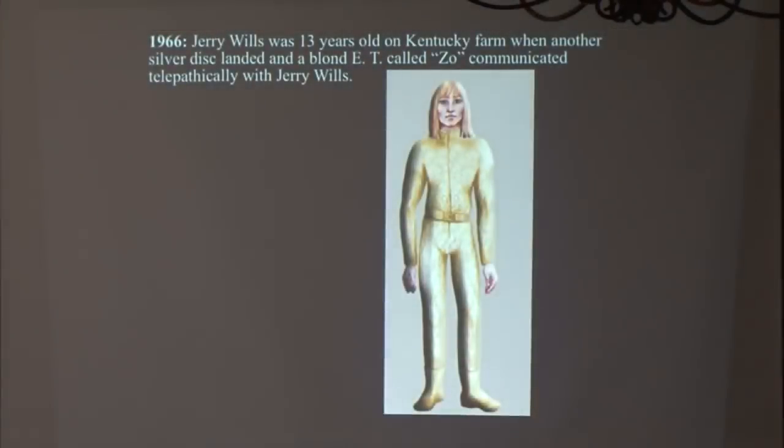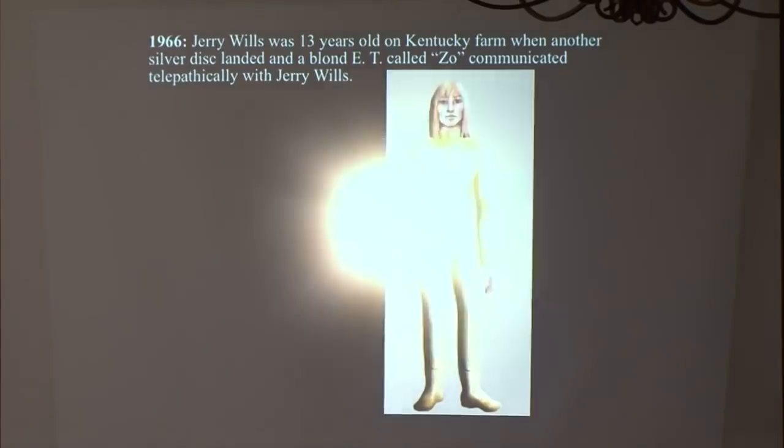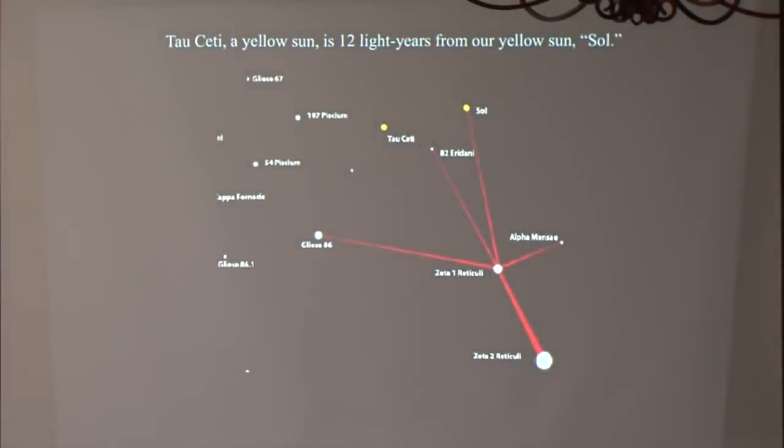A year later, in July 1966, Jerry was face to face with a tall, blonde-haired, blue-eyed extraterrestrial male named Zoe. Zoe said he was from a humanoid civilization on a planet orbiting the star Tau Ceti about 12 light years from Earth.